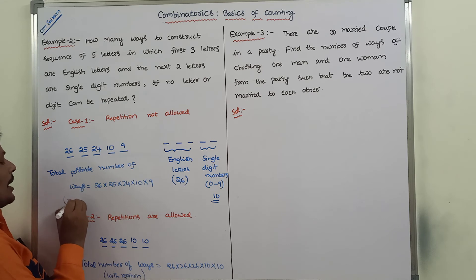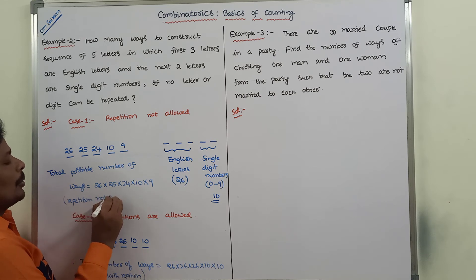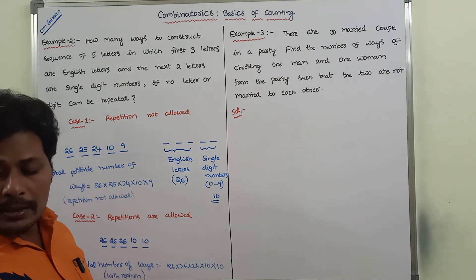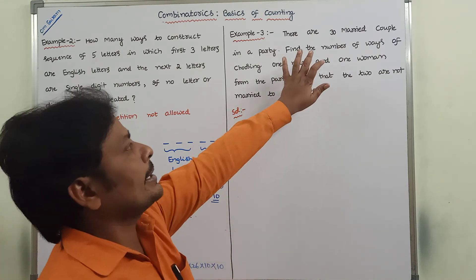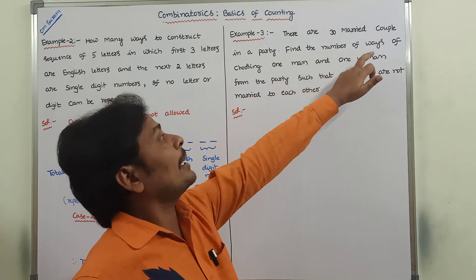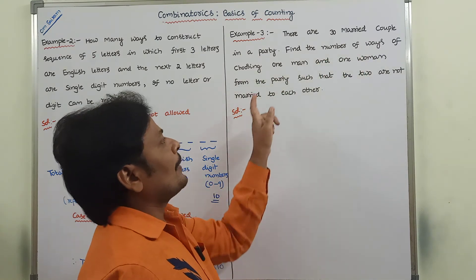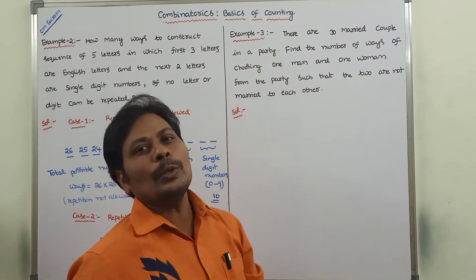So the result without repetition is 26 × 25 × 24 × 10 × 9, labeled as repetition not allowed. Now we go for the next problem, example 3: there are 30 married couples in a party. Find the number of ways of choosing one man and one woman from the party such that the two are not married to each other.